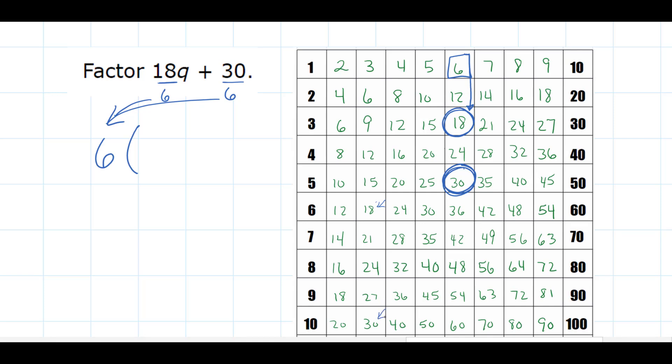Now we have to think how many times can 6 divide into 18? Well, if you don't know, just look at your jump count. Six goes into 18 three times, so it would go into 18q—we would write 3q as our simplified term. Six goes into 30 how many times? Well, it says right here, 5.